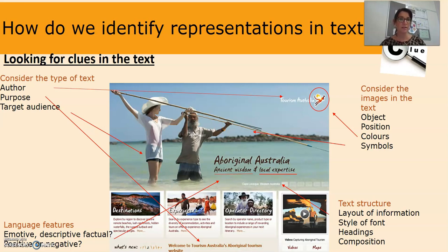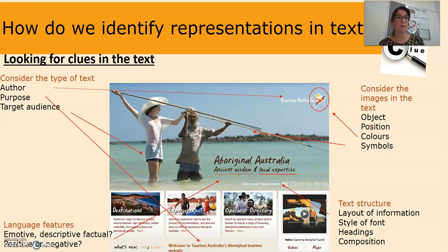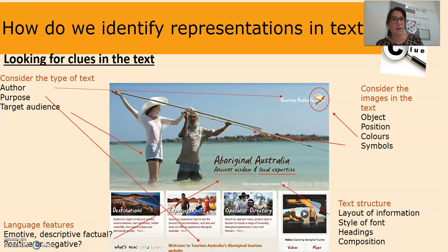When looking for clues in a text we also consider the images — objects, position, colour, symbols — all the things that go into making up an image. The objects here are a white woman and an Aboriginal man standing in the water spearfishing using a traditional spear. Interestingly, the woman is in the foreground and the Aboriginal man is behind her. Why position the objects that way, considering they're trying to make the man seem like the expert in this situation?